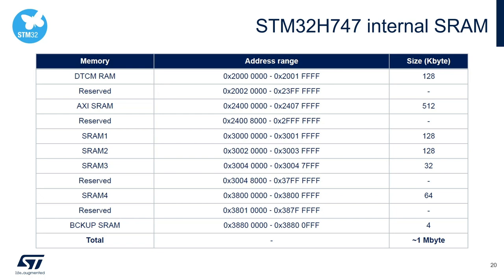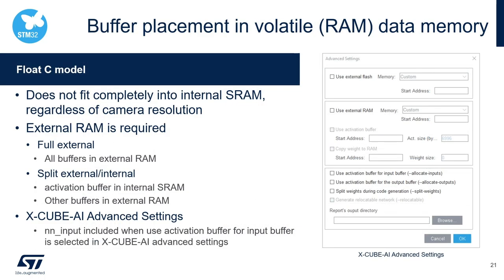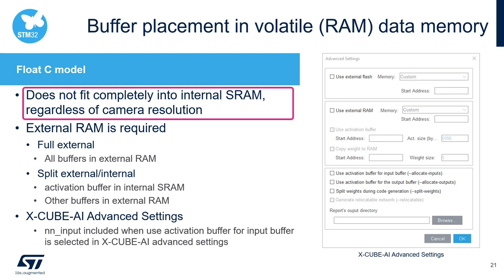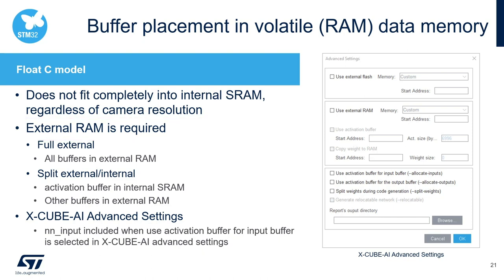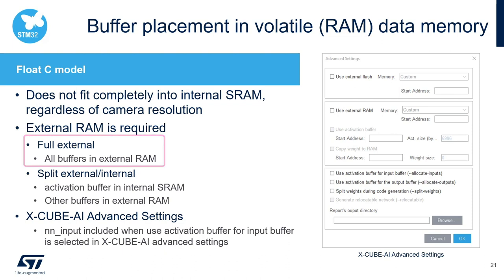In this case, additional external data RAM is required. So, if you recall the numbers we have seen in the previous slide, the float C model implementation does not fit completely into the internal SRAM. Whatever camera resolution is selected, some external RAM is required in order to run this use case. In the context of the FP AI Vision 1 function pack, the two following memory layouts are implemented: one is full external, to place all the buffers in the external RAM; or split external-internal, to place activation buffers in the internal SRAM and the other buffers in the external RAM.